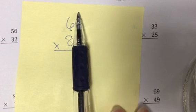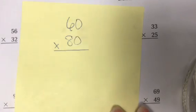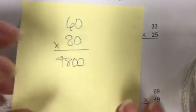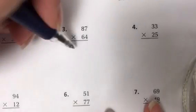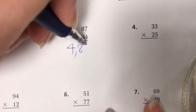I'm going to cover up my zeros and get my base fact. Eight times six is 48. I covered up two zeros and so my partial product is 4,800.